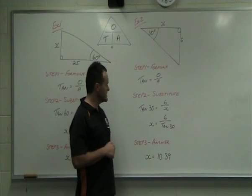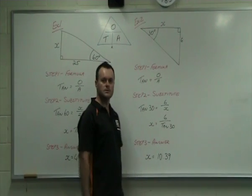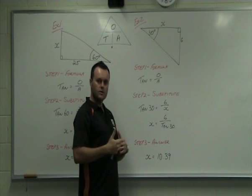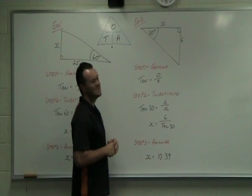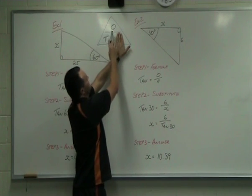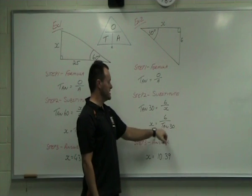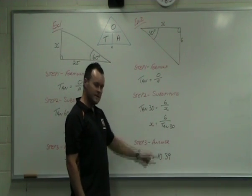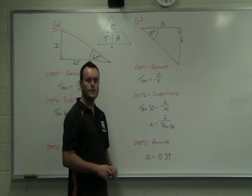Substitute in as our next step. Tan angle 30 is equal to 6, which is our opposite side, divided by our unknown, which is the adjacent. We're going to rearrange so that we get our unknown by itself. This time we're trying to find an adjacent side, so if I cover that, it tells me that it's the opposite side divided by tan of the angle. So what I do is 6 divided by tan 30. Putting that in my calculator again as it reads, and my answer comes out as 10.39.